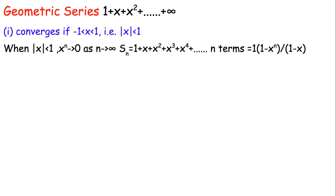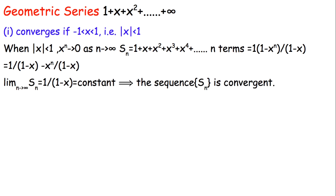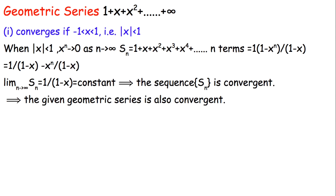The sum 1 + x + x² + x³ + ... up to n terms equals (1 - xⁿ) / (1 - x). As n approaches infinity, xⁿ approaches zero and cancels out, leaving us with 1 / (1 - x), which is a constant. Therefore, when |x| < 1, the given geometric series is convergent.